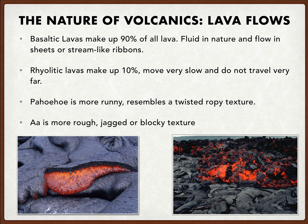Some of the nature of volcanics, such as lava flows, are very unique and different. Basaltic lavas make up about 90% of all lava on the surface that's flowing — fluid in its nature, they flow in sheets or stream-like ribbons. Rhyolitic lavas make up only about 10%. They move very slow and do not travel very far. In most rhyolitic makeups, it's usually very thick layers that have slowly merged out and created larger lines of deposits.